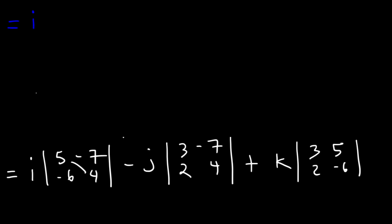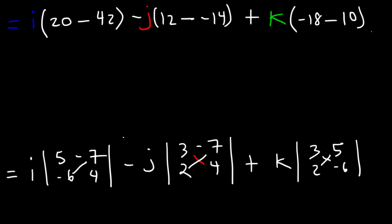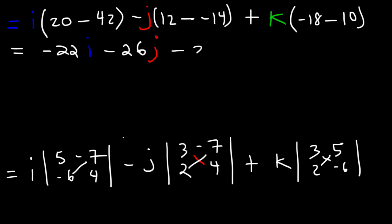For the first one, it's going to be 5 times 4, which is 20, minus negative 6 times negative 7, that's positive 42. And then we have minus j: 3 times 4 is 12, minus 2 times negative 7, which is negative 14. And then k: 3 times negative 6 is negative 18, and 2 times 5 is 10, so it's minus 10. Now 20 minus 42 is negative 22, so it's negative 22i. And 12 minus negative 14 is 12 plus 14, that's 26, and we have a minus in front, so it's negative 26j. And negative 18 minus 10 is negative 28, so it's negative 28k.